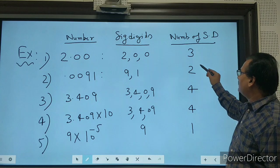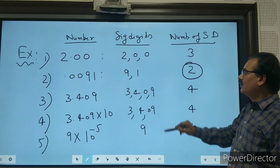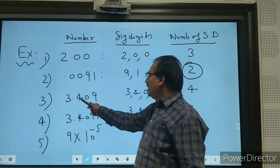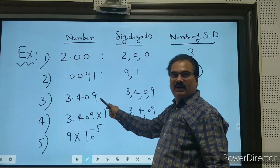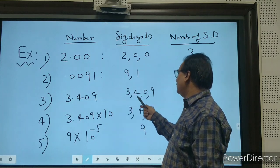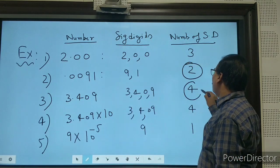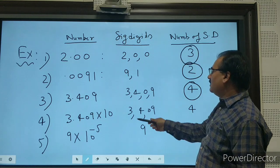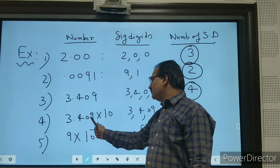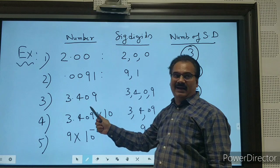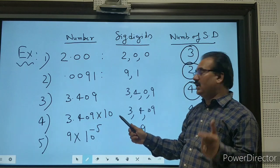Here, 3.409, the significant digits are all: three, four, zero, and nine—means four. Here, but you know, 3.409 multiplied by 10 or 10 power 2 or 3 does not change—the number of significant digits will not change. Three, four, zero, nine means the same four will be the significant digits.